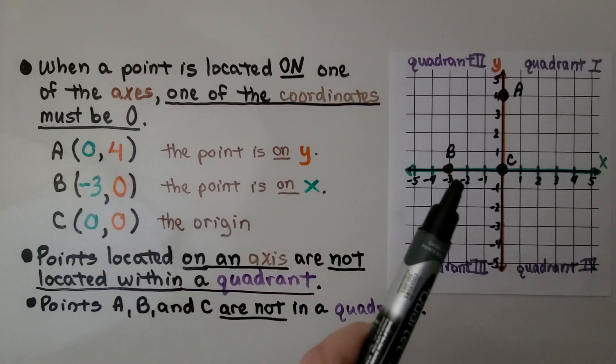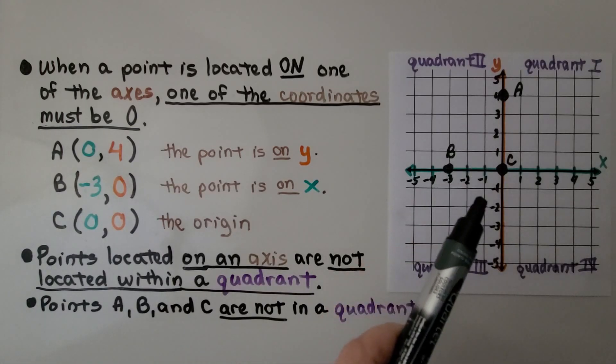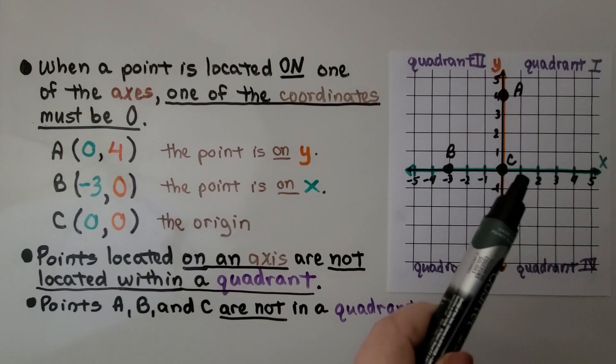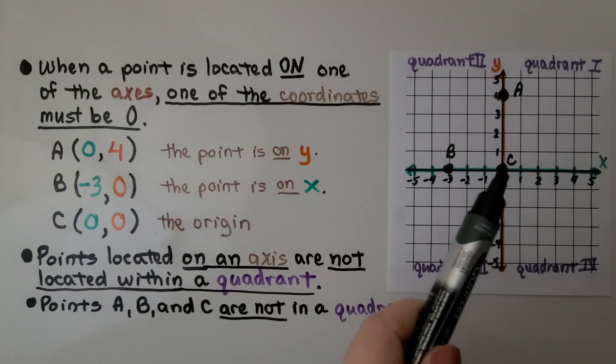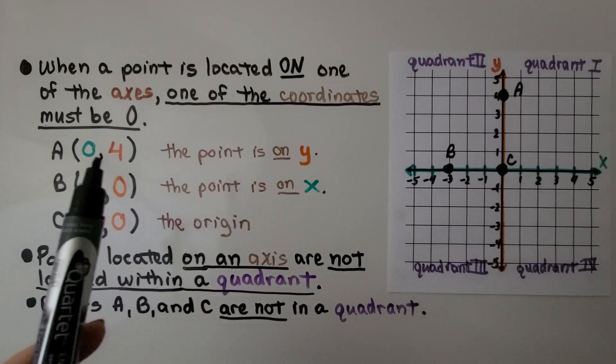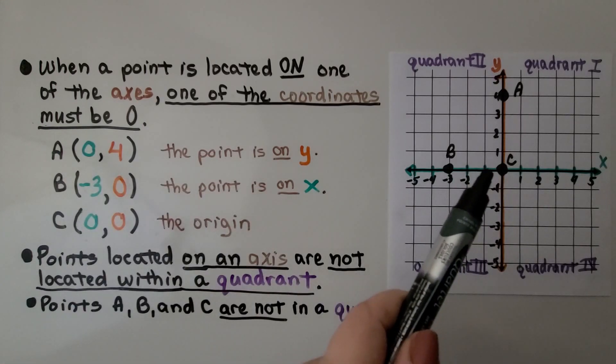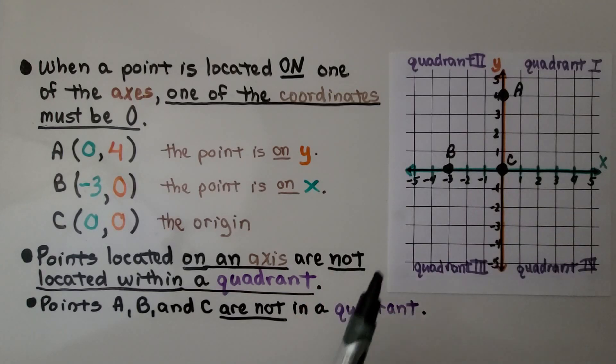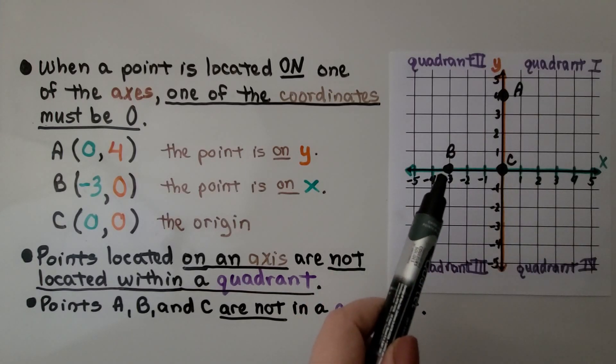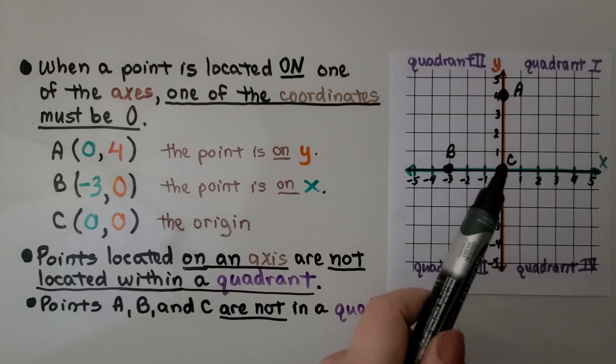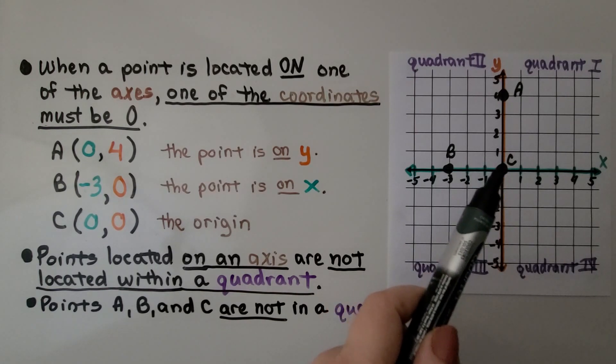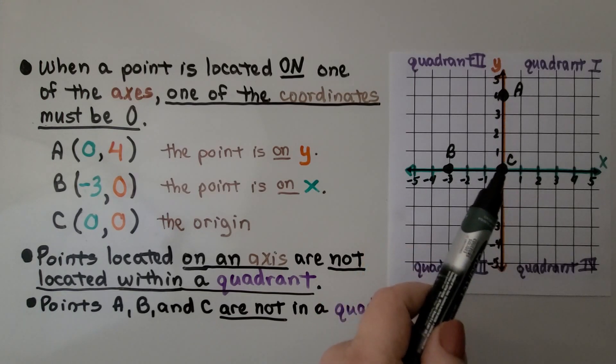Point A is on y. We have negative one on the x and we have a positive one on the x. So that would be zero for x. We have zero for x and we have one, two, three, four for y. And B is at negative three on the x and zero on the y. We have our one and our negative one, so we know for y, that's zero.